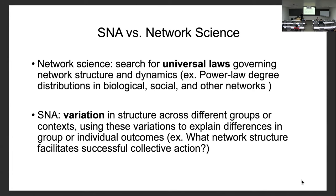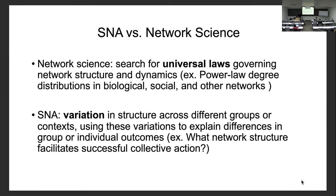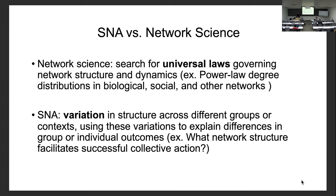The more fundamental distinction between social network analysis and network science is what you're trying to achieve. In network science, it's often about commonalities and universal laws — can you find some universal law governing disparate types of networks from biological to social to mechanical? Social network analysis, because of its interest in human intentionality and social context, has more interest in variation rather than commonalities.